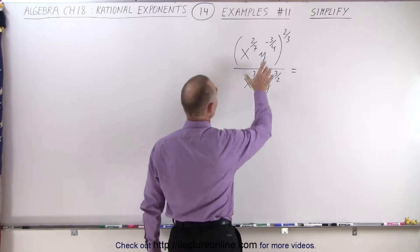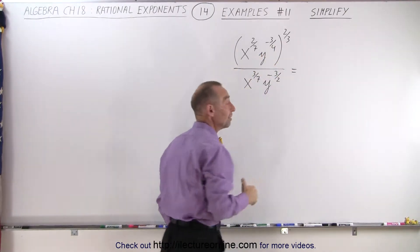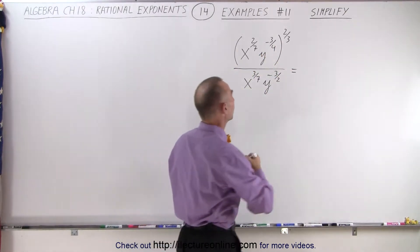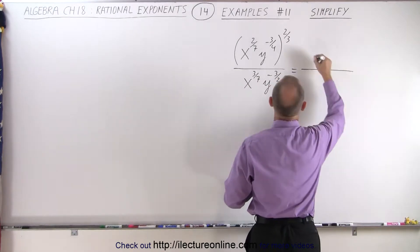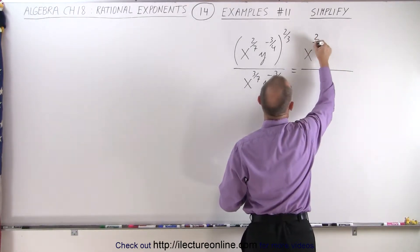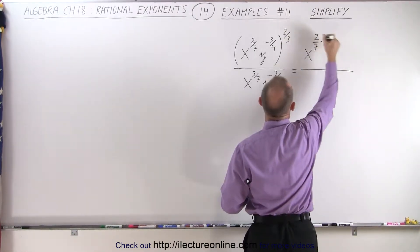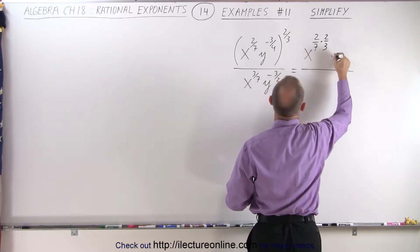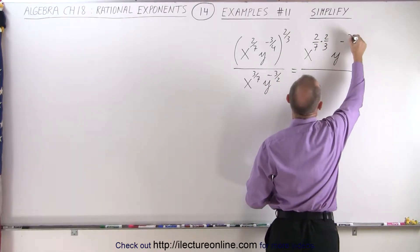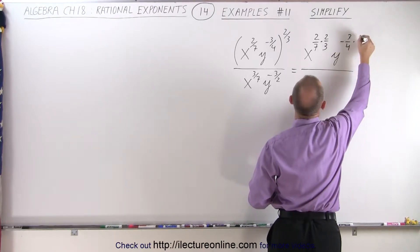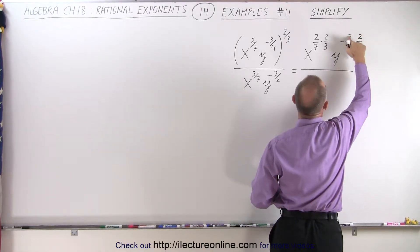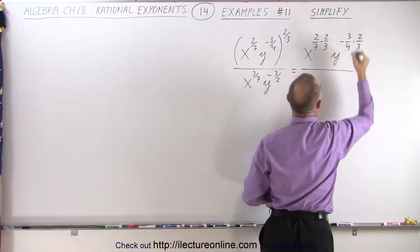So in the numerator, we have exponents raised to an exponent. That means we're going to multiply the exponents. So this becomes equal to x to the 2/7th power multiplied times 2/3rds power, and then y to the minus 3/4th power multiplied times 2/3rds power, like that.